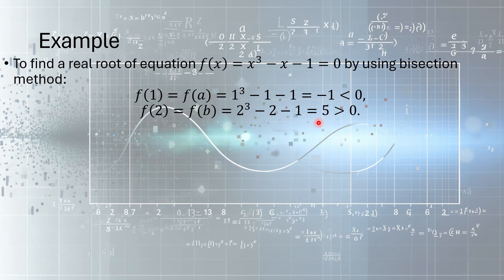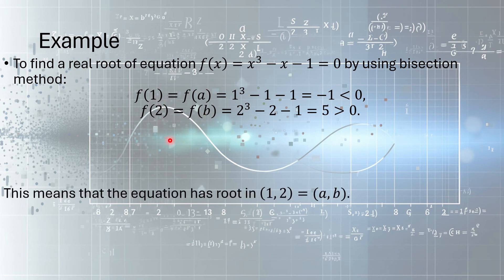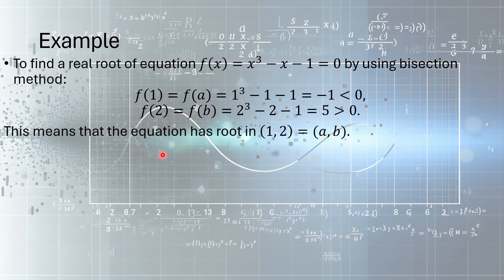5 is greater than 0. So it means the function has opposite sign at x = 1 and x = 2. So the root of this equation will be in this interval 1 to 2. And we call a = 1 and b = 2.